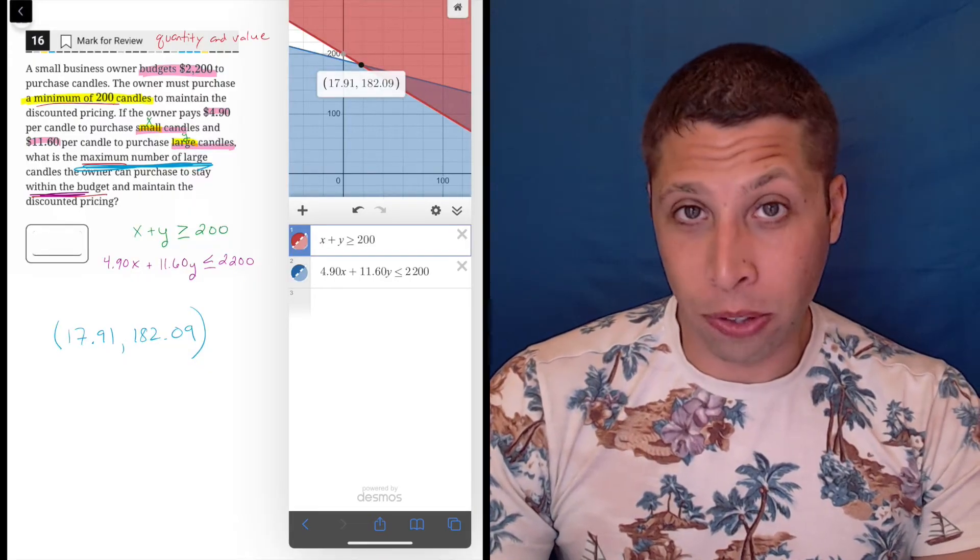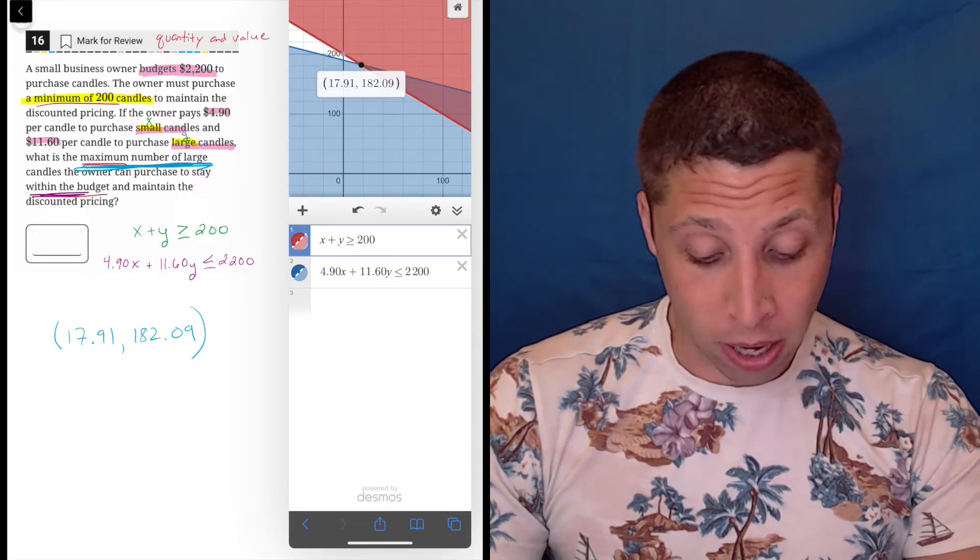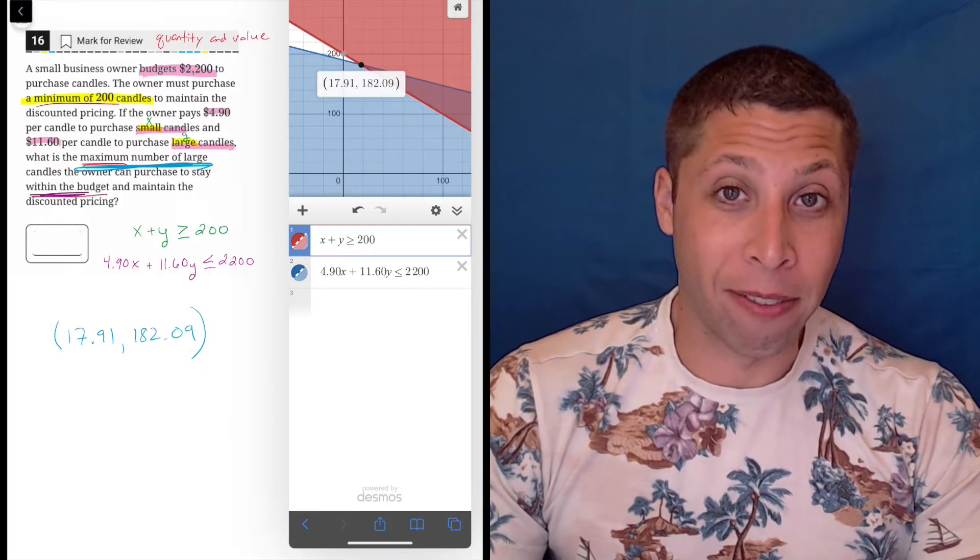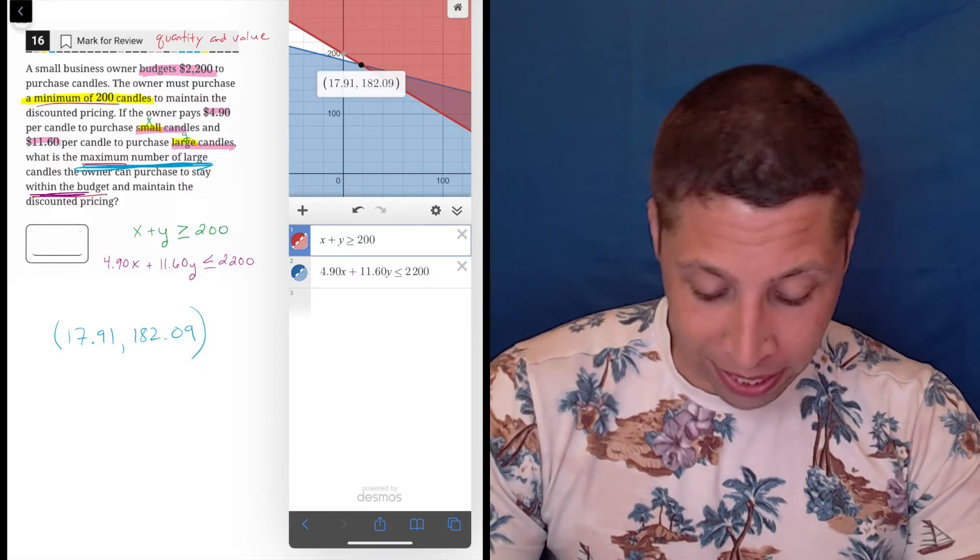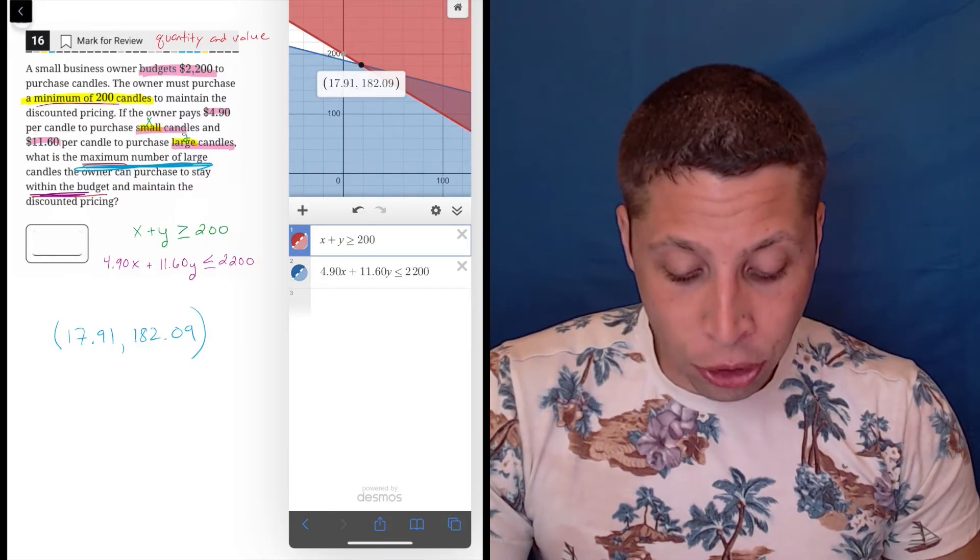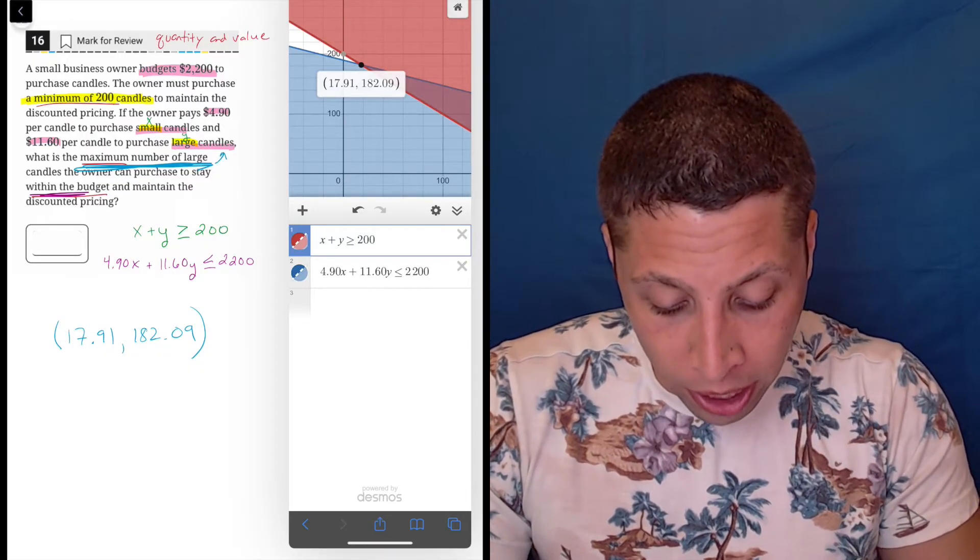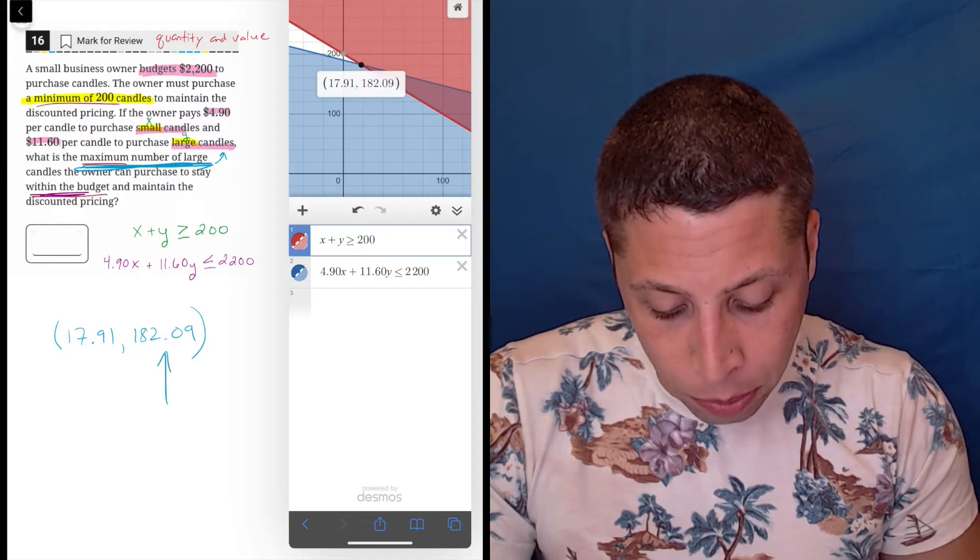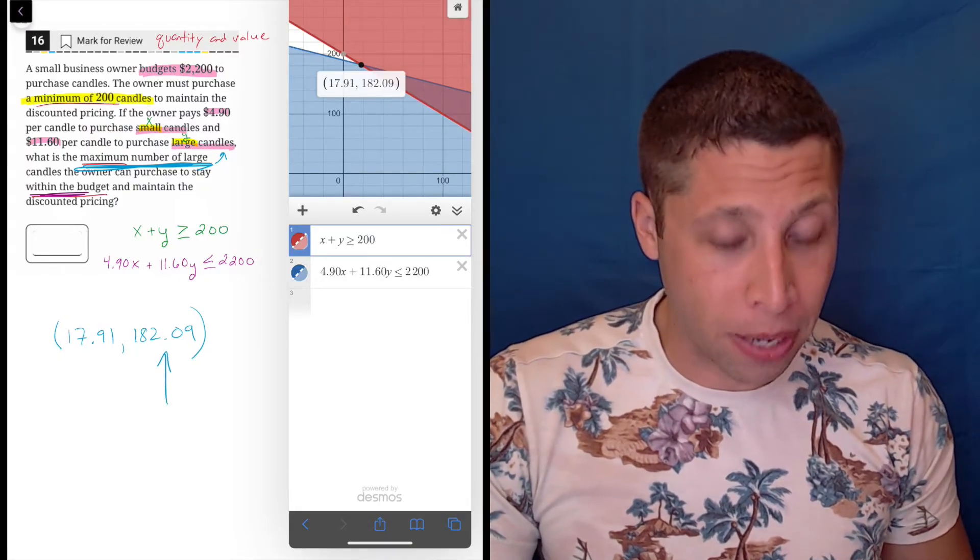Okay. So obviously neither of those things can be the answer because, well, we can't have a fraction of a candle. So we got to deal with that. I do really want to make sure, though, I'm interested in the right thing. And remember, they wanted the large candles. We said the large candles are Y. So it's really this 182 that I'm interested in here.